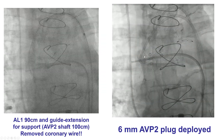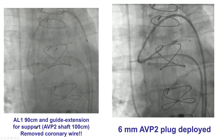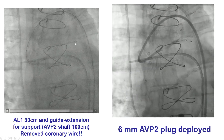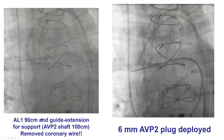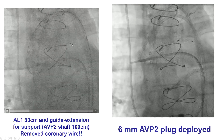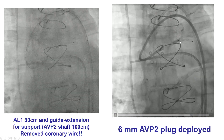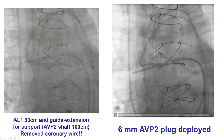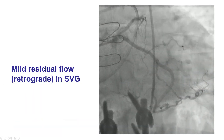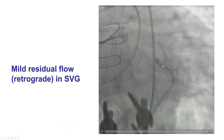Another way to do this is to use a guide extension. So we used back the AL1 guide, preloaded the Amplatzer plug into a guide extension, and then advanced the guide extension inside the saphenous vein graft, pulled back the guide extension, and were able to deploy the AVP2, which provided nice occlusion of the saphenous vein graft. A nice result was achieved on the native vessel — we now have excellent antegrade flow into the circumflex without competitive flow from the saphenous vein graft.